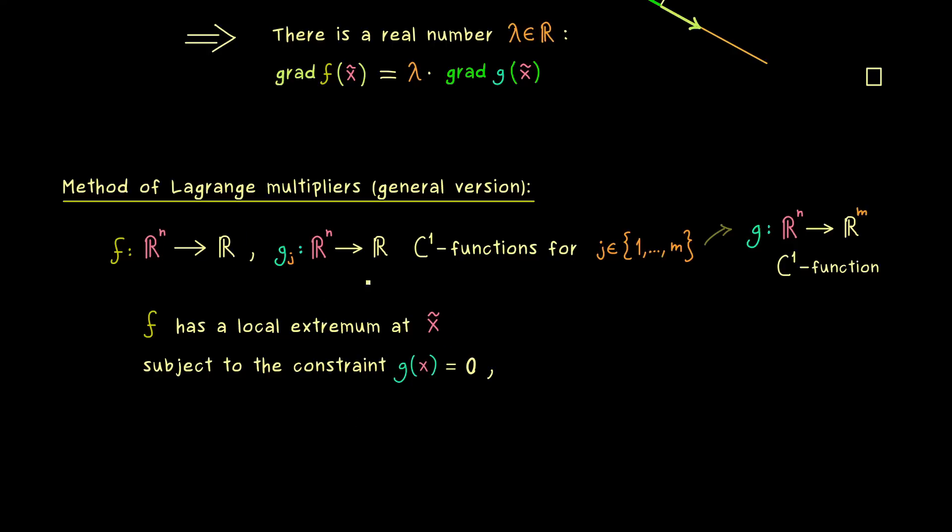So it's a generalization with two parts. But it actually looks the same as before. However now the second assumption has to look a little bit different. Because g does not have a gradient anymore. So now we have to consider the Jacobian of g at the point x̃. Now the Jacobian is a matrix. But in general it's not a square matrix. But we know that in the rows of the Jacobian we find the gradients of the functions gⱼ.